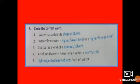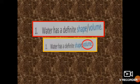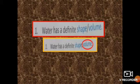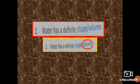Now children, move to question number B. Circle the correct word. Number 1. Water has a definite shape or volume. So, water is shapeless. It does not have any shape. That means it has a definite volume. So, circle volume.